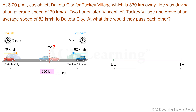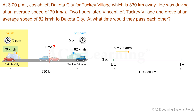The distance between these places is 330 km. Josiah traveled from Dakota City to Taki Village, so above DC we use J to represent Josiah with an arrow pointing toward Taki Village. Josiah started at 3 p.m., and we use S to represent his average speed of 70 km/h. For Vincent, above TV we use V with an arrow pointing toward Dakota City. Vincent started at 5 p.m., and S represents his average speed of 82 km/h.